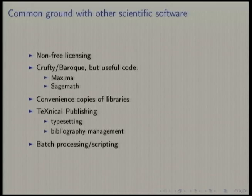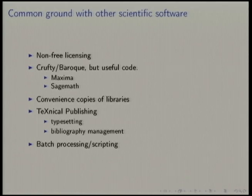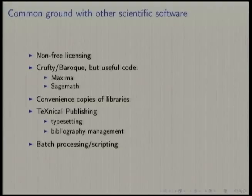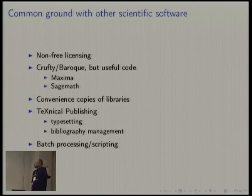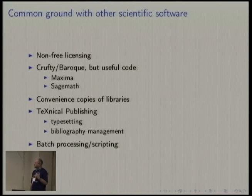We have a lot of old code. Maxima is very old — it's maintained by Cam McGuire, who has been maintaining it for many years. It's based on GCL, which he also maintains. The code in Maxima really goes back to the 1960s — it's older than most people in this room. SageMath has a different problem: it has convenience copies of most of Debian. The embedded libraries problem is a big problem for packaging generally, but it feels particularly acute for work coming out of academic environments.